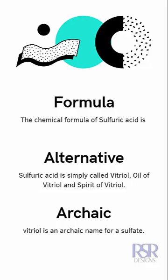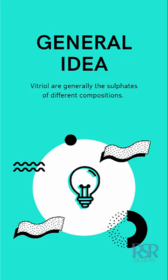Vitriol is an archaic, ancient name for a sulfate. In a general sense, vitriol encompasses sulfates of different compositions that exist in different forms, so vitriol broadly denotes a sulfate.